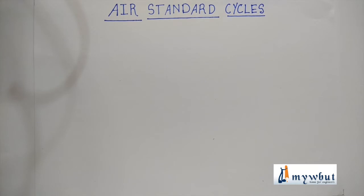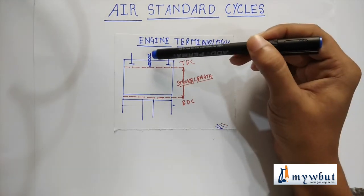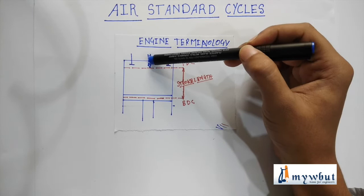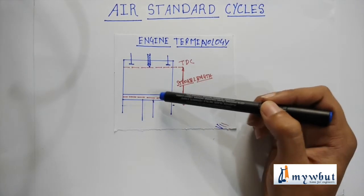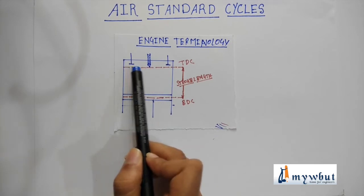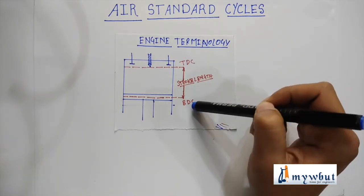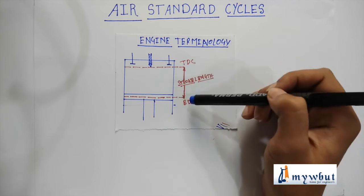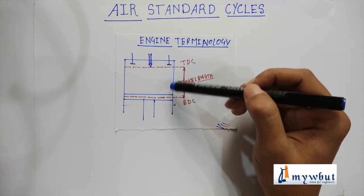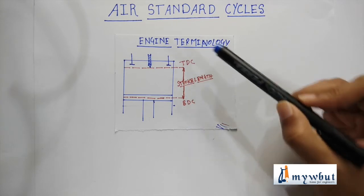Now after seeing the difference between CI and SI engines, we are going to learn some engine terminology. This may be the spark plug or the fuel injector. This is the inlet valve and this is the outlet valve in an engine. This is the piston. These two red lines are known as the top dead center TDC and the bottom dead center BDC. The top dead center is the extreme position to which the piston can compress, and the bottom dead center is the position to which the piston can extend. The maximum length between TDC and BDC is known as the stroke length.